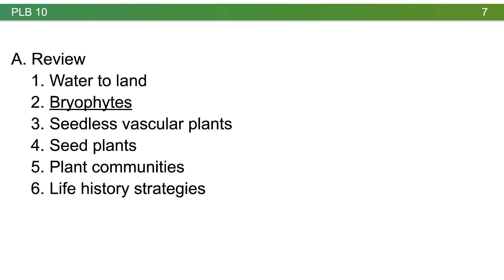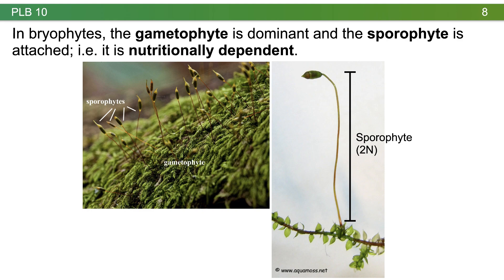The first lineages to transition to life on land are the bryophytes. In bryophytes, the gametophyte generation is dominant — the primary photosynthetic part is haploid, very similar to aquatic algae. Because the zygote is retained and undergoes mitotic division, we get a multicellular diploid sporophyte, but it remains attached and nutritionally dependent on the gametophyte. The sporophyte may be briefly green, but it quickly turns brown and relies on the gametophyte for nutrition.